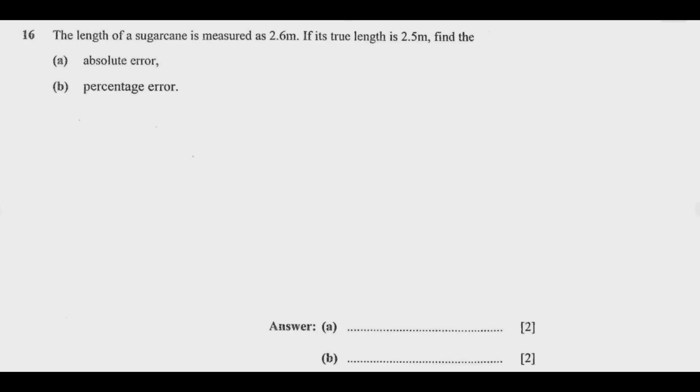How do you find the absolute error? The absolute error AE is given by the difference between the measured value and the true value. The measured value is 2.6 meters, the true value is 2.5 meters. So we get 2.6 meters minus 2.5 meters, then we get 0.1 meter.